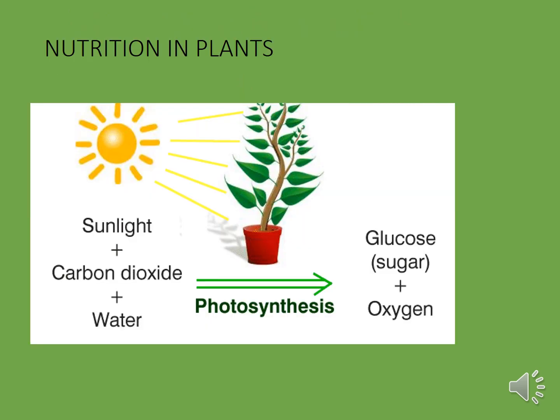Photosynthesis is the process in which carbon dioxide and water combine in the presence of sunlight and chlorophyll. What is the function of chlorophyll? Chlorophyll traps the sunlight. Carbon dioxide and water convert this solar energy into chemical energy, and glucose is formed with the release of oxygen, which is very important for us. Without oxygen we cannot survive. This is the process of photosynthesis.